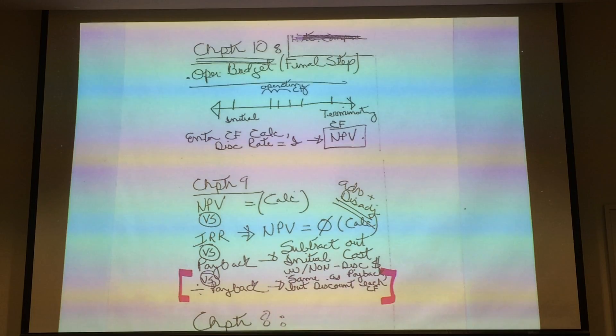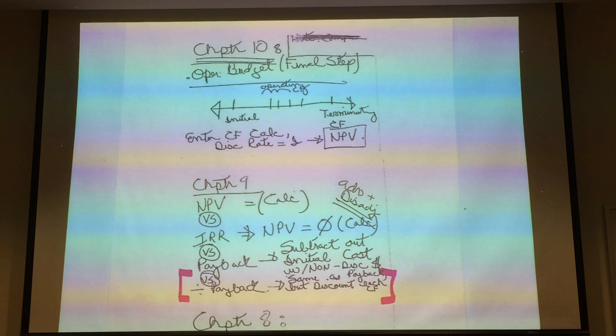We know that if your net present value is positive, you're going to do the project. So you have to get all those, discount them back, show me the net present value, say yay. That's the concepts and the formulas you need to help for the test. So, what I'm going to do now is go through.